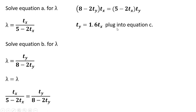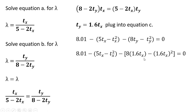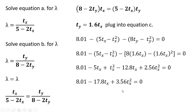Now we're going to plug this result back into equation C. Where we have T subscript Y, we replace it with 1.6 times T subscript X. Making that substitution and simplifying, we arrive at a quadratic equation. Skipping the solution details, the tax in the market for good X is going to be 50 cents. We ignore the larger tax of 4.5, as that would come at a much higher deadweight loss — we're trying to minimize deadweight loss, so we pick the smaller number.